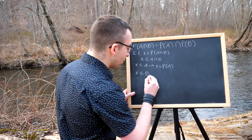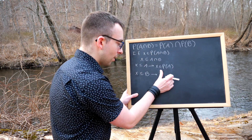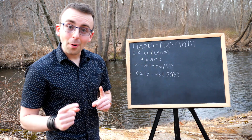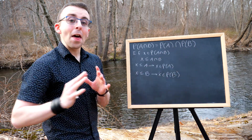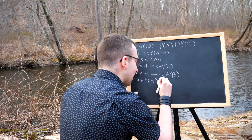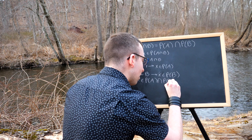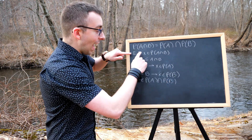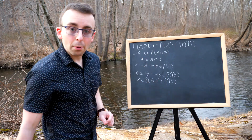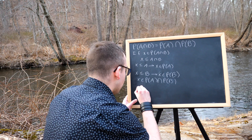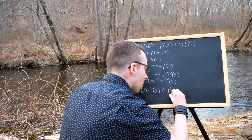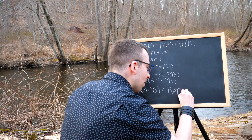Similarly, since X is a subset of B, we can conclude that X is an element of the power set of B. So X is in the power set of A, X is in the power set of B, thus it's in their intersection. X is an element of the power set of A intersected with the power set of B. So we've proven that any element of the power set of A intersect B is also an element of the intersection of power set of A and power set of B. Thus, by definition of subset, the power set of A intersect B is a subset of the power set of A intersected with the power set of B.